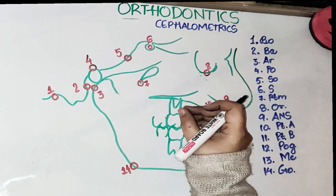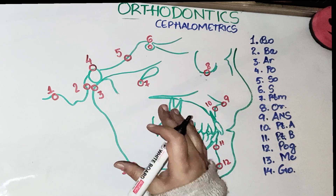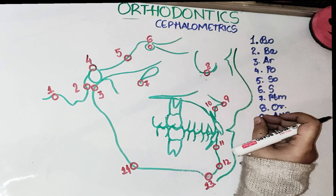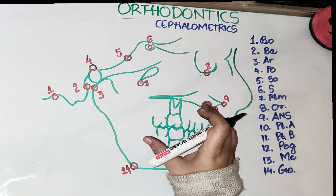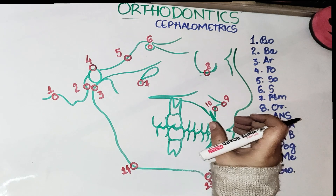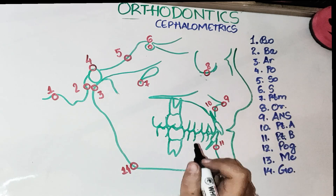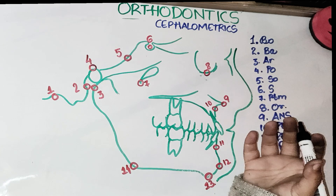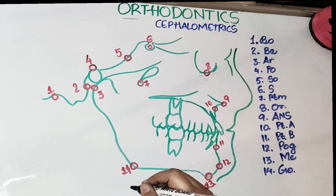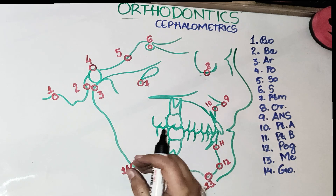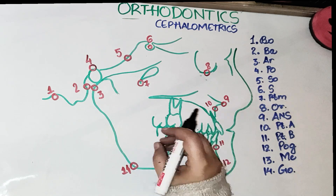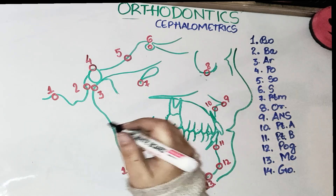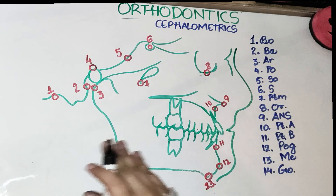Cephalometric Analysis is used to assess the skeletal pattern and it also determines the degree of difficulty we are going to have during treatment and which kind of appliance we need to give to the patient. It is done on a tracing paper using a sharp pencil with good background illumination. It is definitely easier to carry out in a dark room, and you can block the rest of the areas on the film.